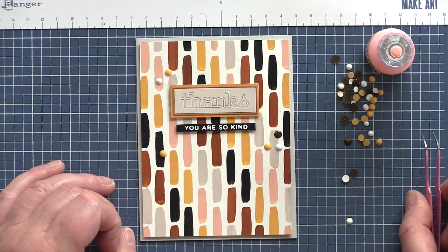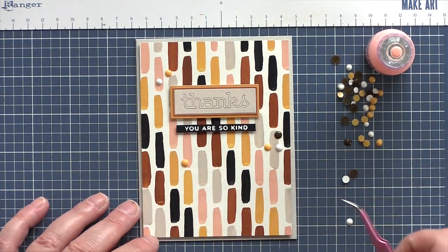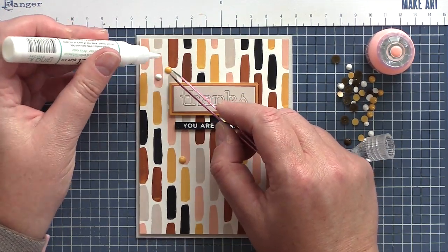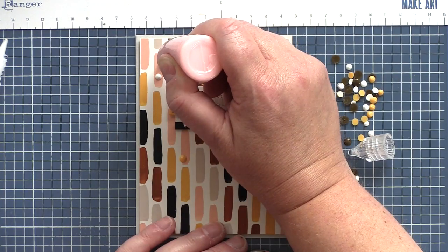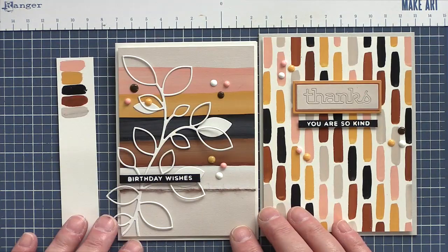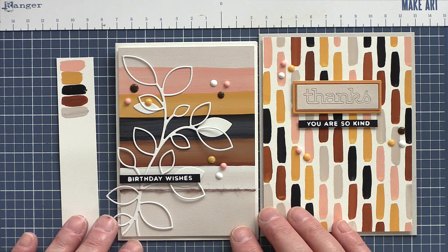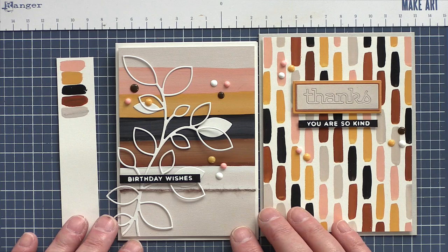I then used the same combination of Nuvo droplets, both the dry sugared almond, dark walnut, and simply white ones with a few freshly squeezed bubblegum blush. And there you go, two simple painted striped backgrounds with die cut elements, skinny sentiment strips, and Nuvo droplets to coordinate.